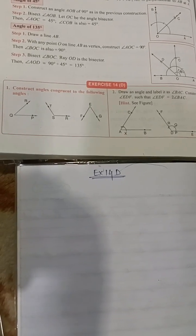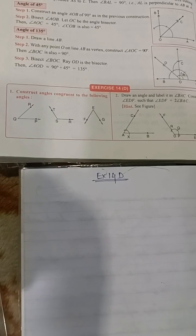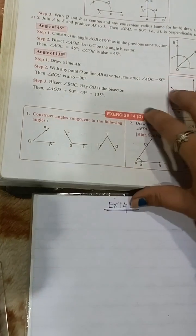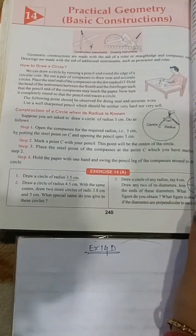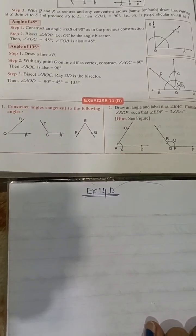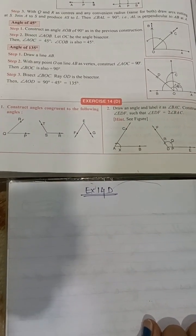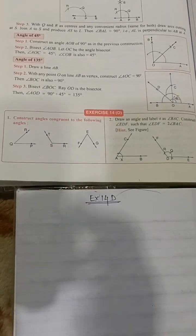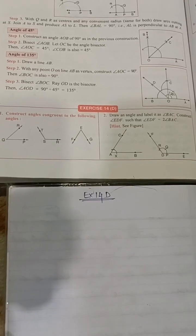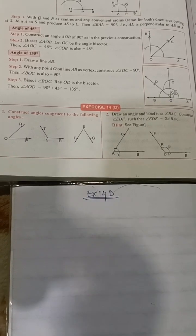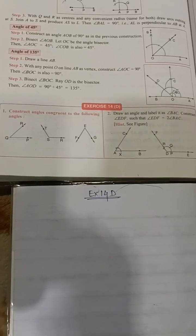Hello everyone, this is Mamtha Mond and today we are going to construct some construction problems from Exercise 14D, Chapter 14. The chapter name is Practical Geometry — Basic Construction — from Composite Mathematics Class 6. If you have not subscribed to my YouTube channel, please subscribe and hit the bell icon for notifications. Please visit my blog mascara.com for more information regarding textbook solutions of CBSE, ICSE, and other state boards.